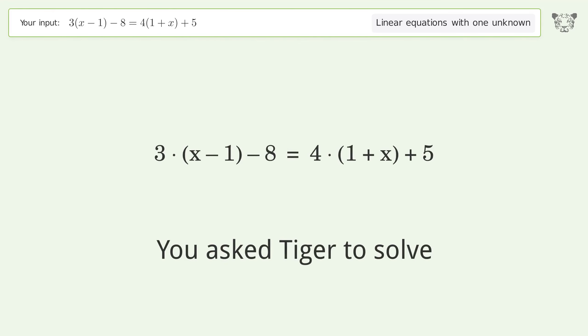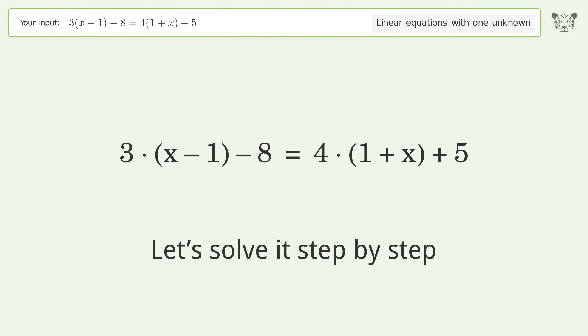You asked Tiger to solve this linear equation with one unknown. The final result is x equals negative 20. Let's solve it step by step.